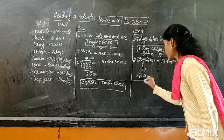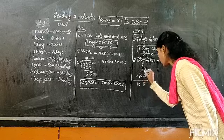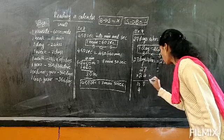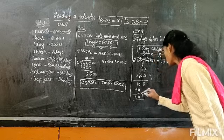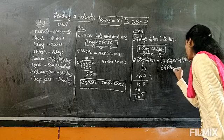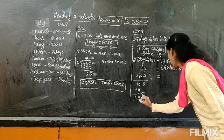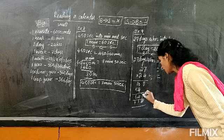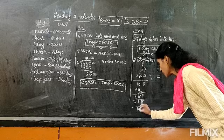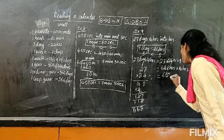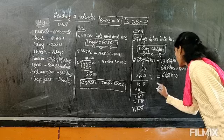Multiply 27 by 24: 7×4=28, carry 2; 7×2=14, plus carry 1 gives 15... working it out: 27×24=648. Then 648 plus 14 hours: 8+4=12, write 2 carry 1; 4+1+1=6; 6. So the answer is 662 hours.